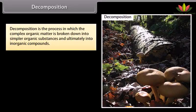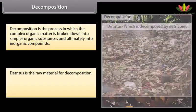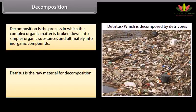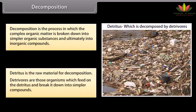Decomposition is the process in which the complex organic matter is broken down into simpler organic substances and ultimately into inorganic compounds. Detritus is the raw material for decomposition. Detrivores are those organisms which feed on the detritus and break it down into simpler compounds. There are following steps in decomposition.